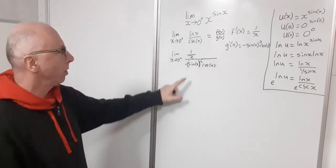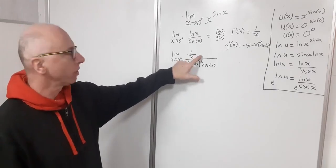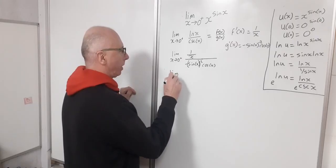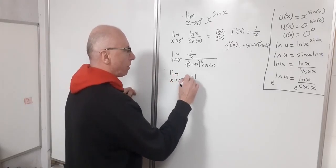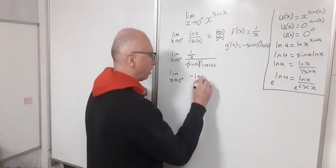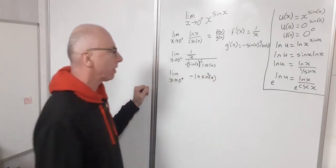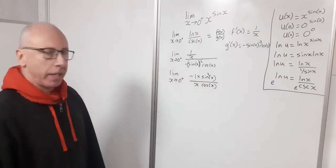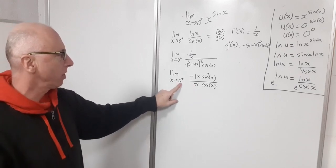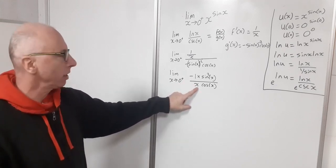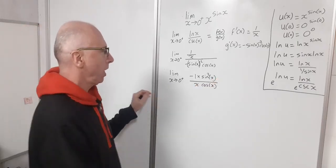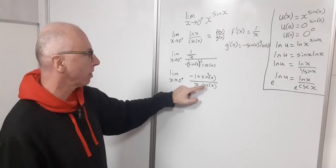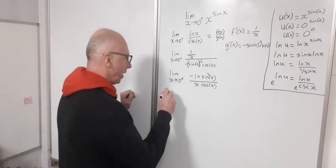Let's tidy this up. Bringing sin²(x) to the numerator and keeping the negative sign, we get the limit as x→0⁺ of (−sin²(x)) / (x · cos(x)). Plugging in zero still gives zero in the denominator. Noticing that sin(x)/cos(x) is tangent, we can factor out tan(x), leaving one factor of sin(x) and x in the denominator.